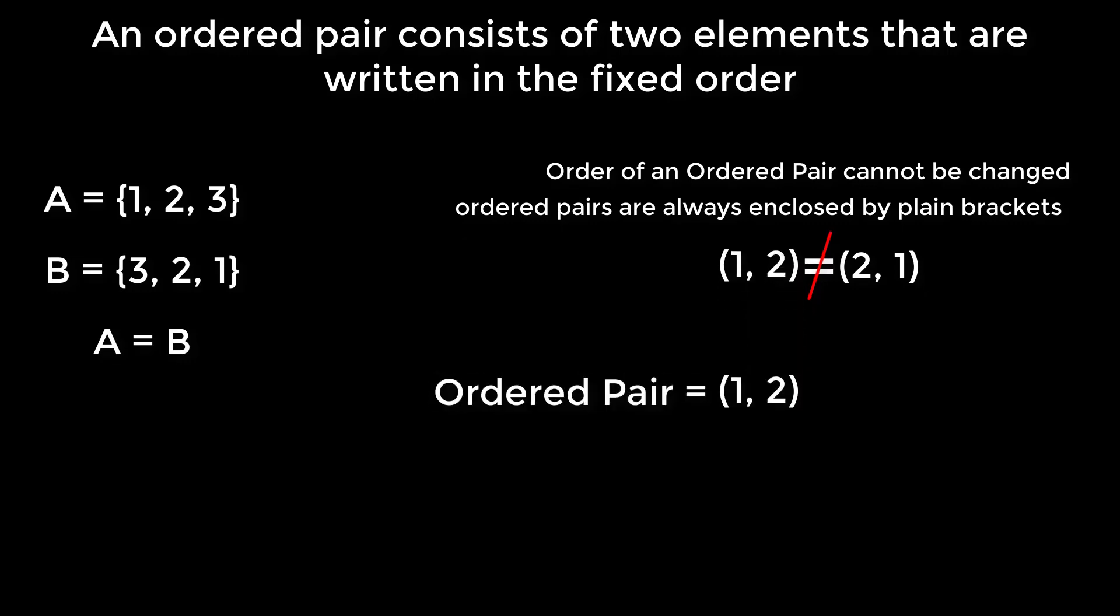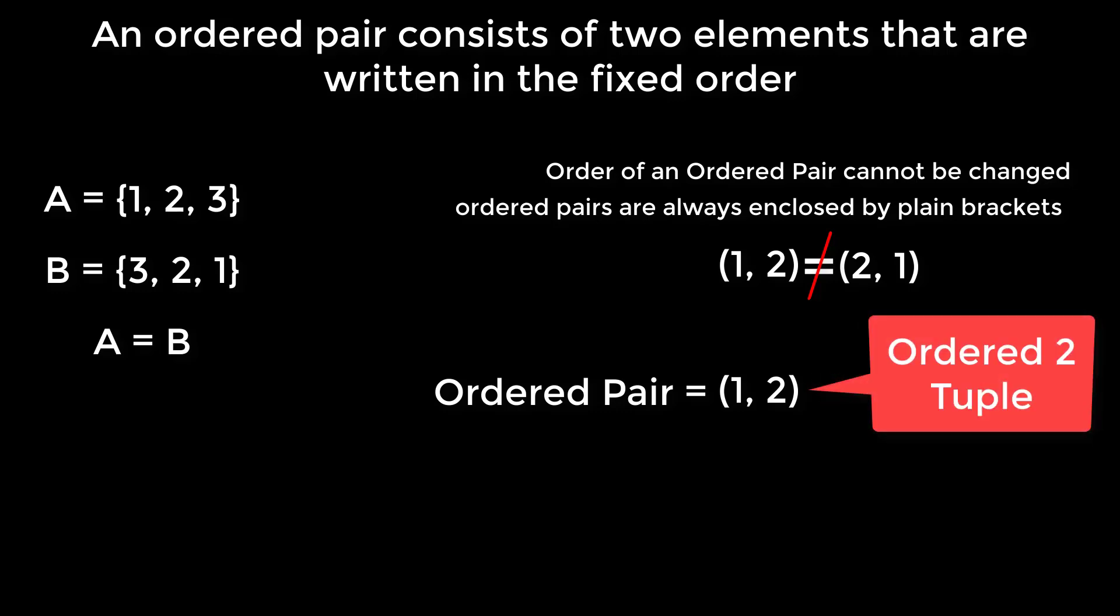This ordered pair is also known as an ordered 2-tuple. If there are 3 elements, then it is an ordered triple or ordered 3-tuple.